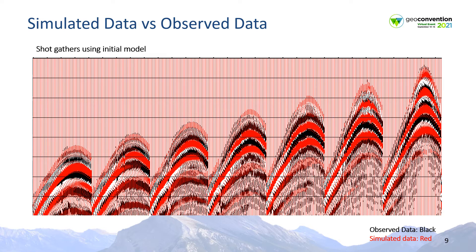This is an example showing how the FWI algorithm converges until the field shot gathers shown in black match the simulated shot gathers, which are shown in red.